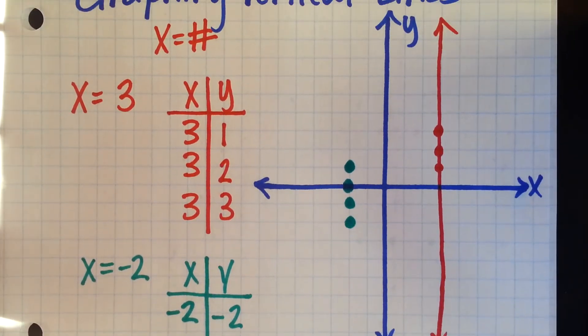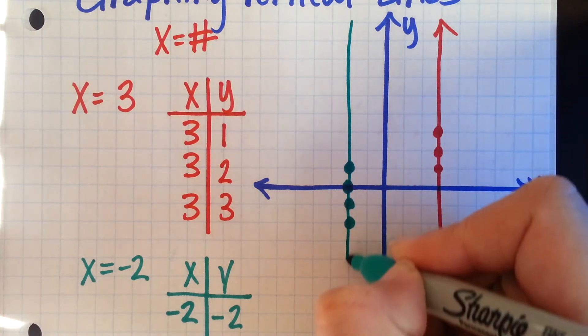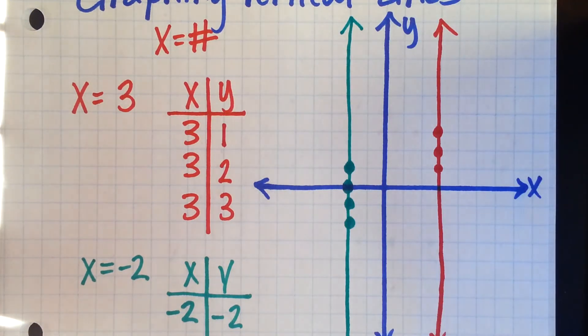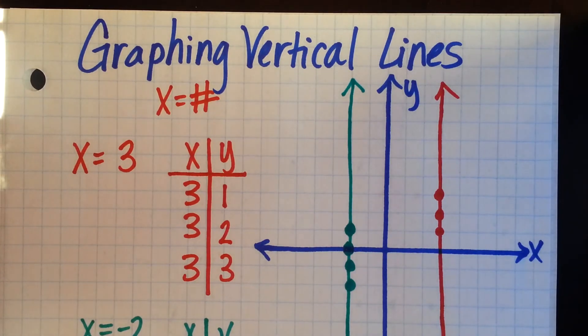So if we connect those dots, we have a vertical line at x equals negative 2. And that's how we graph vertical lines.